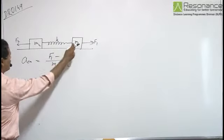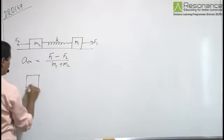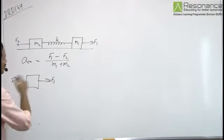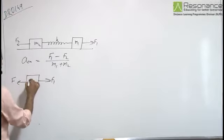Now consider the acceleration of each block. F1 is the applied force on M1, and F is the force due to the spring during elongation.